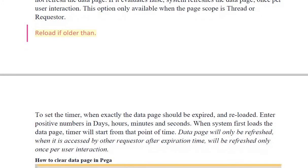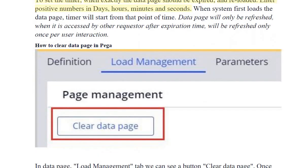Reload if older than: To set the timer for when exactly the data page should expire and be reloaded, enter positive numbers in days, hours, minutes, and seconds. When the system first loads the data page, the timer starts from that point in time. The data page will only be refreshed when it is accessed after the expiration time, and will be refreshed only once per user interaction.